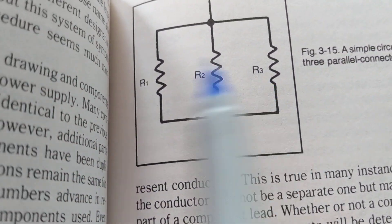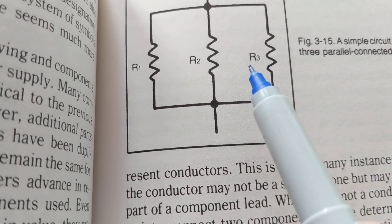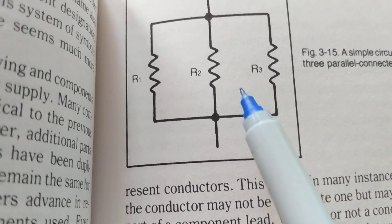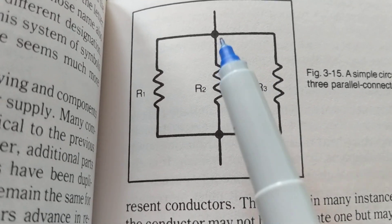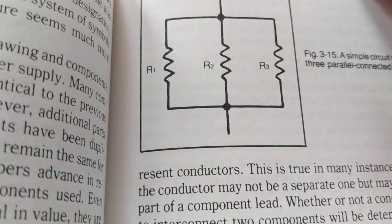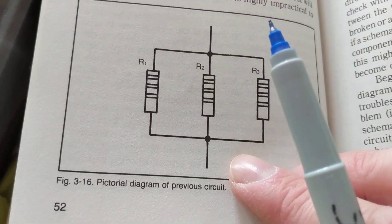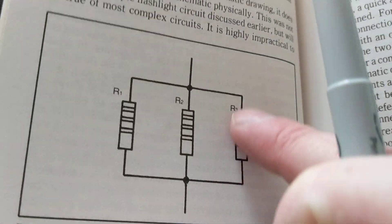Looks like what we had before. What are these? Resistors. What's missing again? We have the reference designators R1, R2, R3, but we're missing the value of each one. How are they connected? They're connected in parallel. And this would be the pictorial for it — one resistor, two resistors, three resistors, all connected across from each other in parallel.